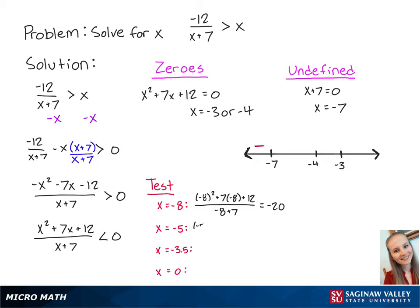For x equals negative 5, we have negative 5 squared plus 7 times negative 5 plus 12, all over negative 5 plus 7, which is equal to 1. Since this number is positive, this means that x values between negative 7 and negative 4 will make the left side of the inequality positive.